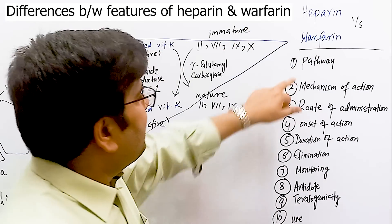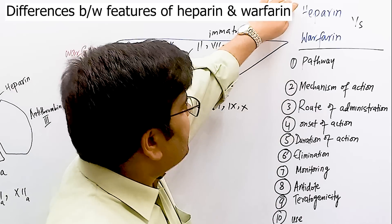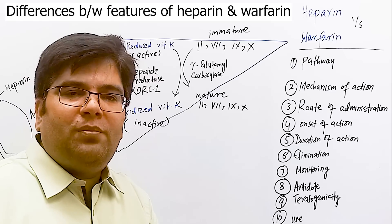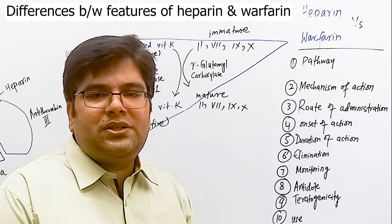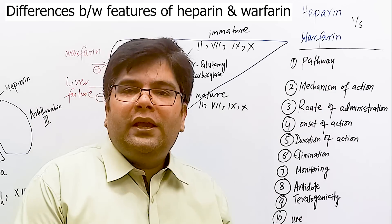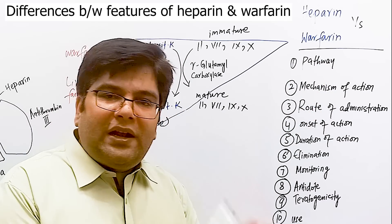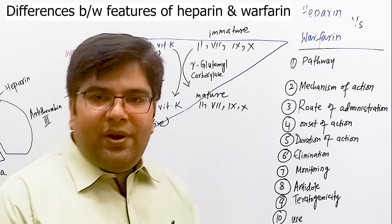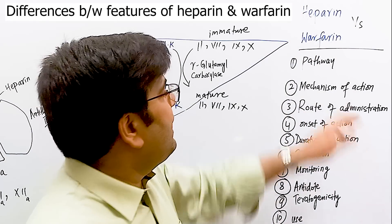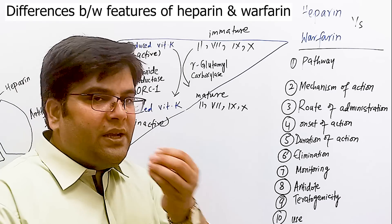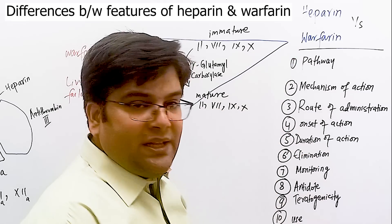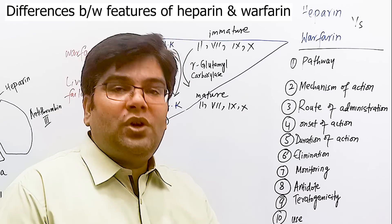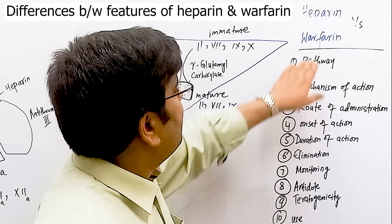Comparing heparin and warfarin: heparin acts mainly on the intrinsic pathway, while warfarin acts mainly on the extrinsic pathway. Heparin's mechanism is binding with antithrombin 3 as a co-factor, removing thrombin and inactivating clotting factors 9, 10, 11, and 12. Warfarin inhibits epoxide reductase, preventing vitamin K from converting immature clotting factors 2, 7, 9, and 10 into mature forms. Heparin is injectable (intravenous or subcutaneous); warfarin is an oral tablet. Heparin's onset is instantaneous, making it suitable for emergencies, while warfarin acts slowly.